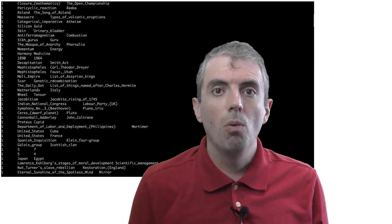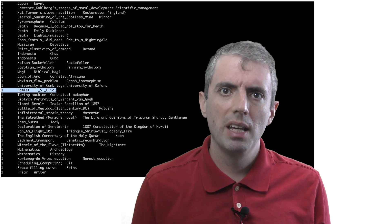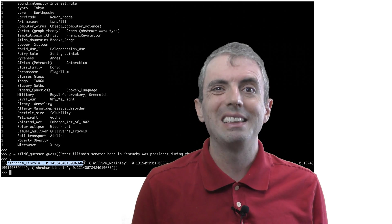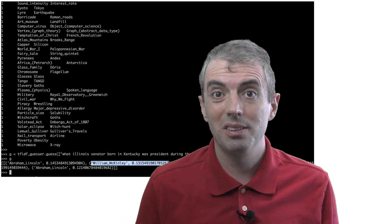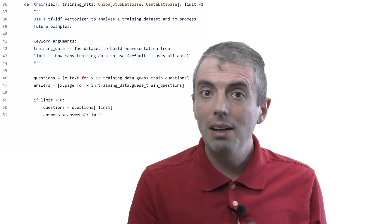When you run TF-IDFGuessr.py, you first see the confusion matrix, which shows where you're getting stuff wrong. For example, you can see that sometimes it confuses specific with general names or screws up the entity type. Then we ask it to generate five guesses on the question: What Illinois senator born in Kentucky was president during the U.S. Civil War? Look at that! Abraham Lincoln is a top guess. As I said, this isn't going to be perfect. The wrong answer is ranked number two and the score is only slightly lower than Abraham Lincoln. But you can also see how creating a buzzer that, for example, notices that Abraham Lincoln appears twice in the list of guesses might help you out to know that, hey, yeah, maybe actually the answer is Abraham Lincoln.